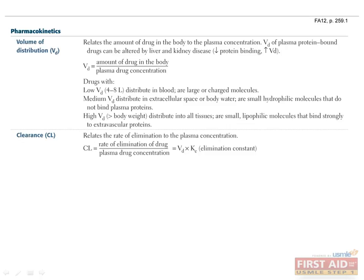Clearance relates the rate of elimination to the plasma concentration and is defined as Cl equals the rate of elimination of the drug divided by the plasma drug concentration, which is equivalent to the volume of distribution multiplied by the elimination constant Ke. It is important to note that clearance does not refer to how much drug is cleared, but to the volume of plasma that the drug is completely removed from per unit time. Thus, it is measured in units of volume per time, generally milliliters per minute or liters per hour. For example, if a person has five liters of blood and one-fifth of the drug is removed from the plasma in an hour, the clearance would be one liter per hour.